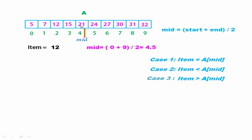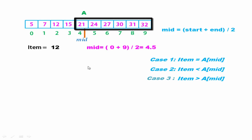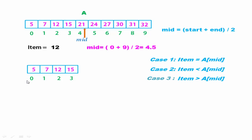Here we compare 12 with 21. 12 is less than 21, so we discard all the elements from index 4 to 9. After discarding, our reduced search base has starting index 0 and ending index 3. Now we find the middle element: (0 + 3) / 2 = 1.5. We take the integer part, so the middle element is at index 1.